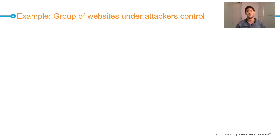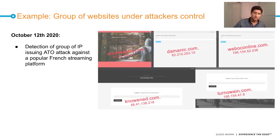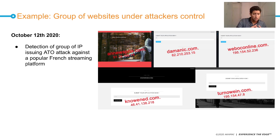Let's look at two examples. The first is a group of websites we detected in October issuing account takeover attacks against a very popular French streaming platform. We picked only five of them, but there is a larger list. They are based on the same templates. You can see the IPs provided by the IP reputation data, and the domains we found with our DNS data — this is why we blocked them.